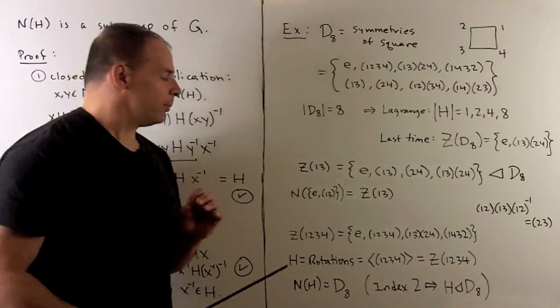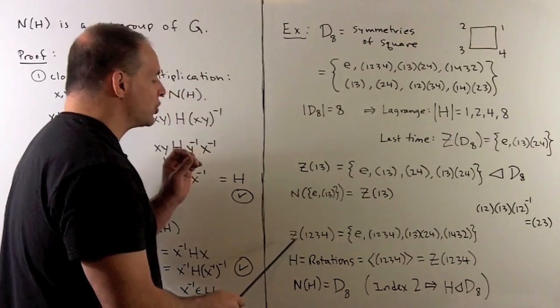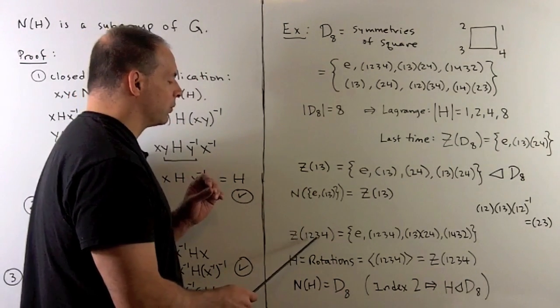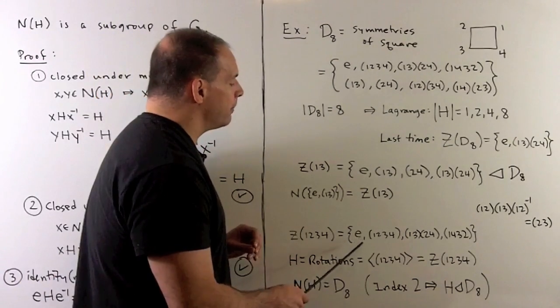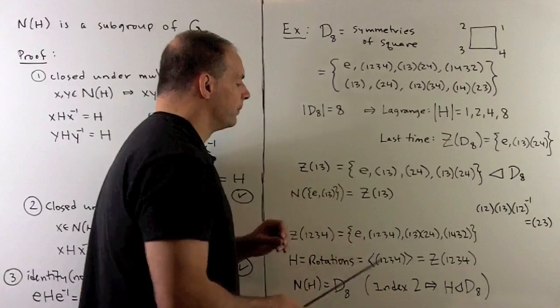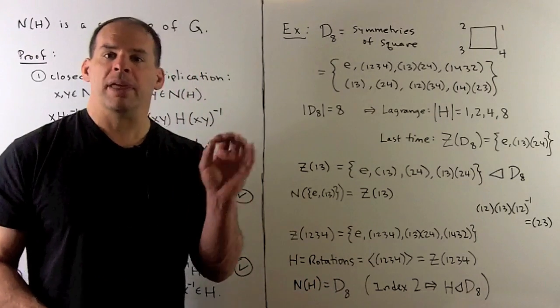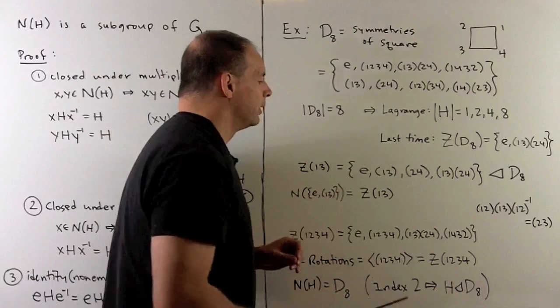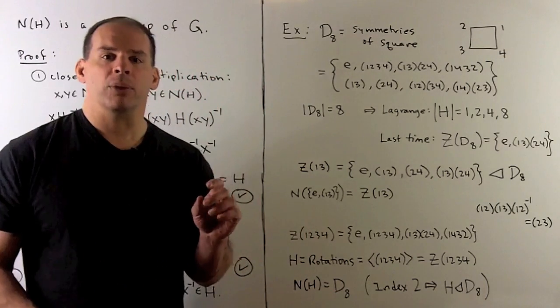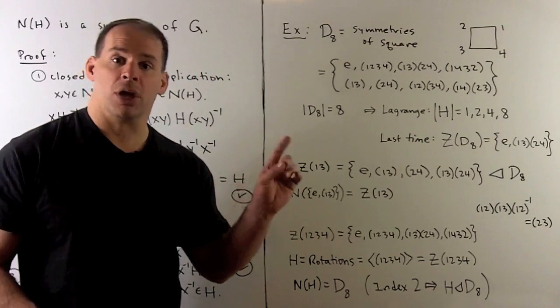For a different example, let's try the centralizer of the rotation (1,2,3,4). Same as before, we have the identity element, we have the element itself. If we square the element, that'll commute with the element, so that's (1,3)(2,4). If we take the third power, we have (1,4,3,2), and that's also the inverse.